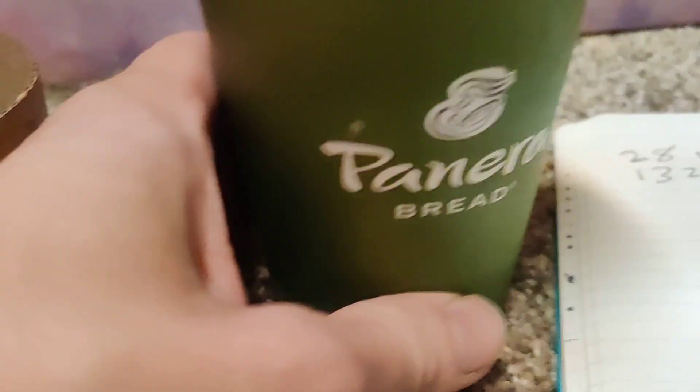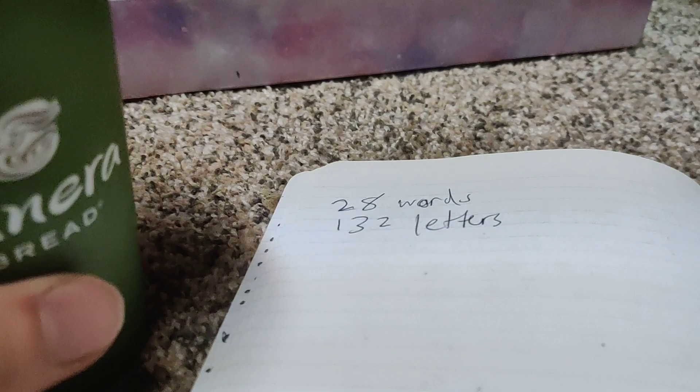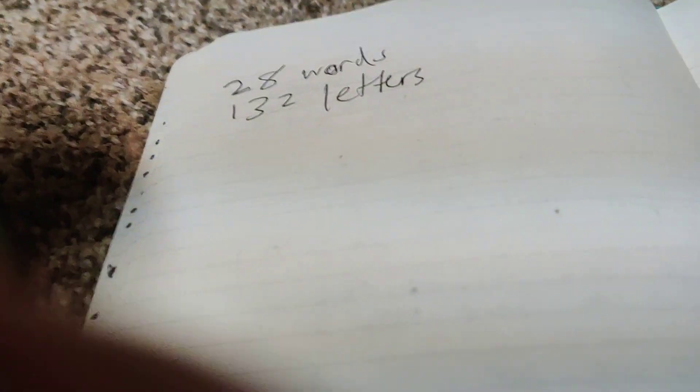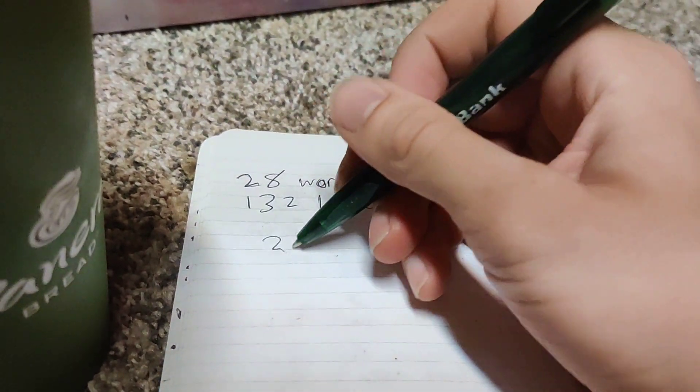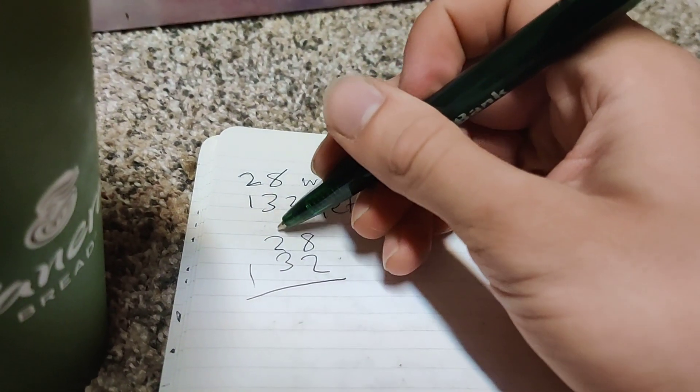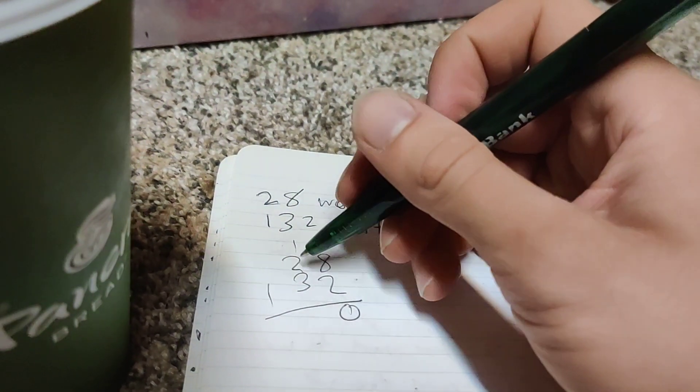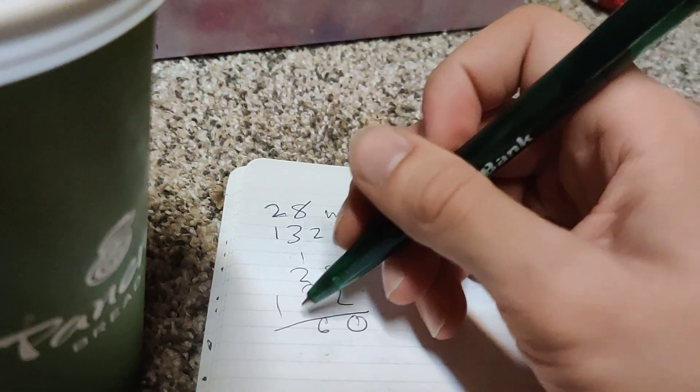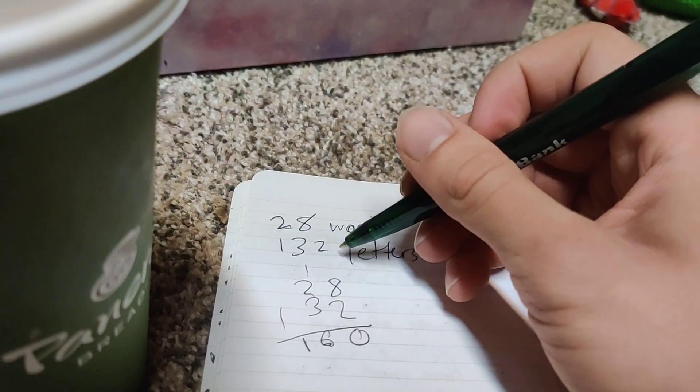So there's 132 letters on the cup, and that's not including the bottom because the bottom doesn't matter. Now I'm going to add these numbers up because I want to get a feel for what the cup is, what's going on with the cup. We're going to add up these numbers and we get, what do we get? We only have 10 here. This is how you add, right? Is that how it works? Is that 160? Yeah, I think that's how it works.